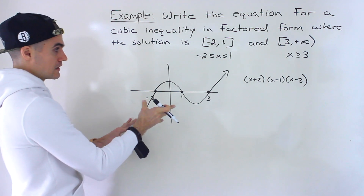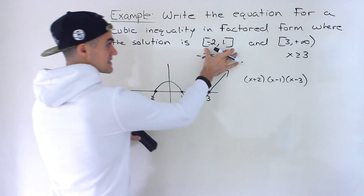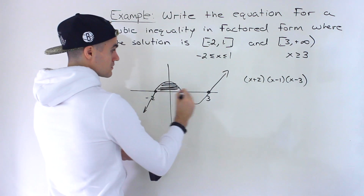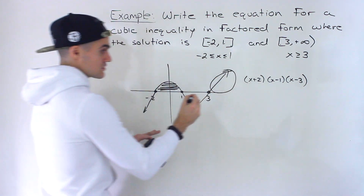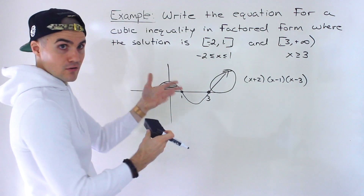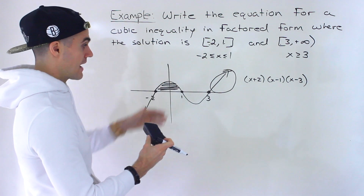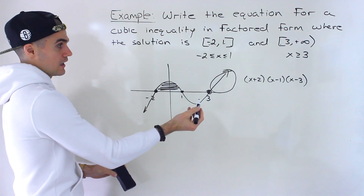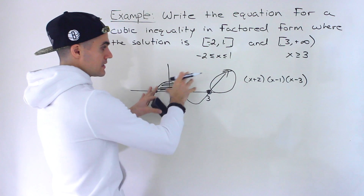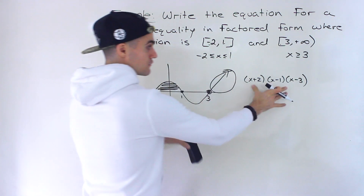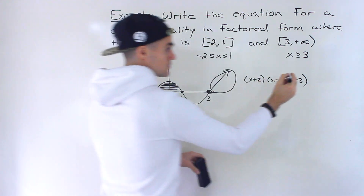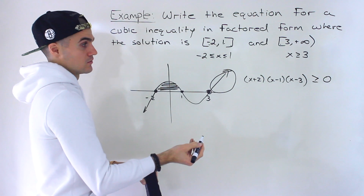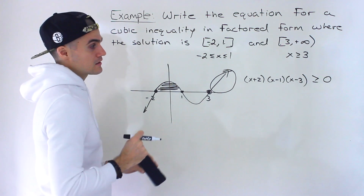Looking at the diagram, these intervals are the values of x where the y-values are greater than or equal to zero — meaning above or on the x-axis. So we can say that this is the graph, and to get these solutions, we're finding when f(x) is greater than or equal to zero. That ends up being the answer.